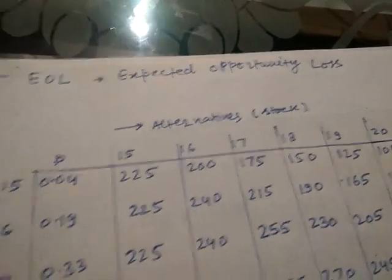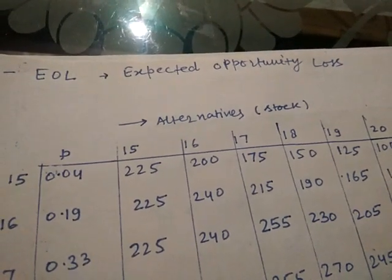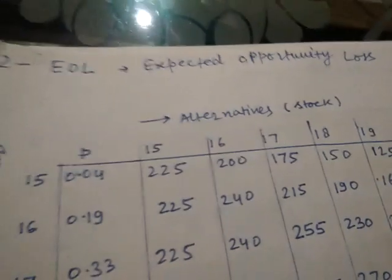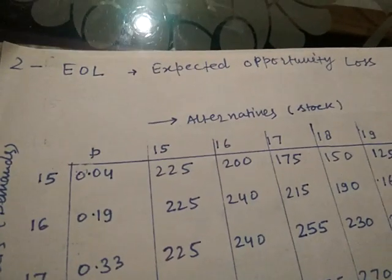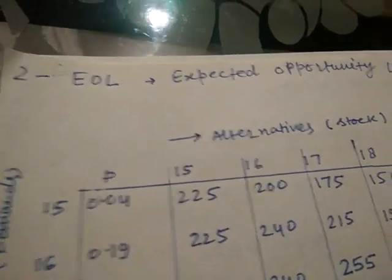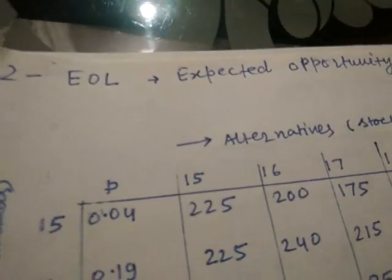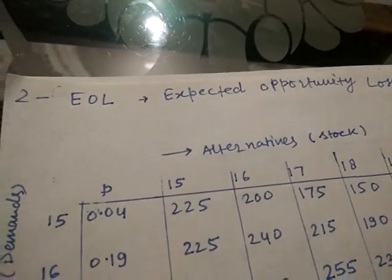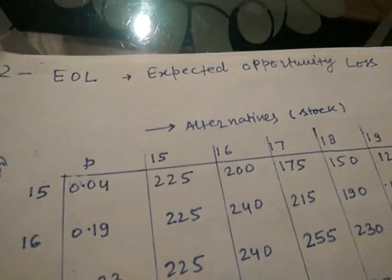Dear students, this time we are going to understand the second criterion in decision making under risk, that is EOL — Expected Opportunity Loss. You can choose any one of the criteria unless it has been specified in the question. If it has been specified, you have to follow that criterion. So it is imperative to understand both criteria, because most of the time these criteria are asked by name — take the decision by EMV, or take the decision with the help of EOL. So you need to know both.